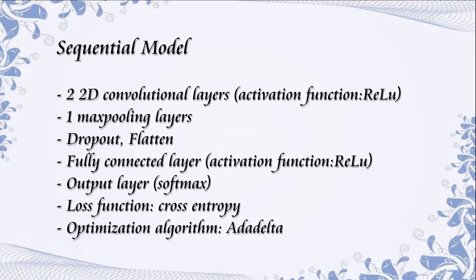We apply a dropout method to the input of the fully connected layer, which is also the output of the max pooling layer, so that overfitting can be efficiently prevented. We also need to flatten the output of the max pooling layer so that it becomes a 1D vector that can be fed to the fully connected layer. After one fully connected layer, the output layer comes, containing four units corresponding to four classes.